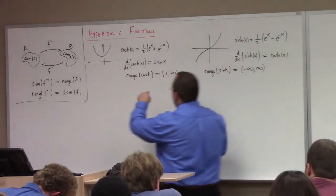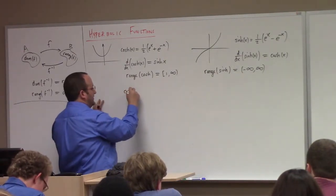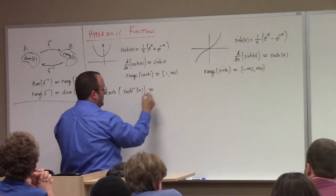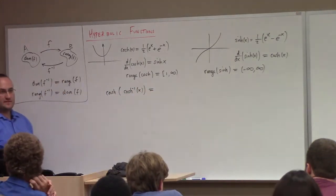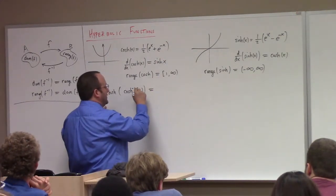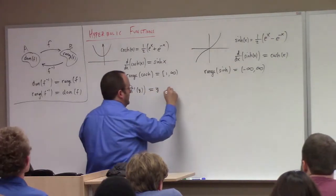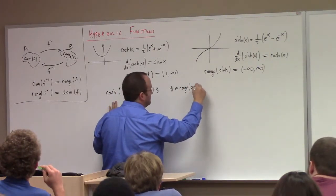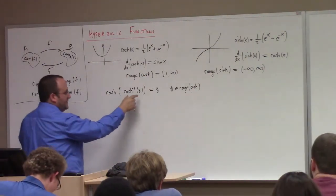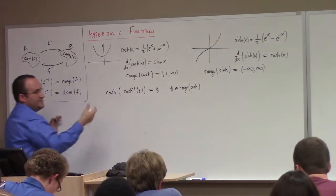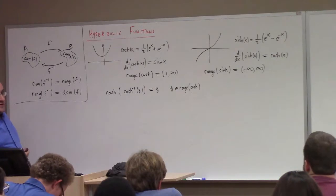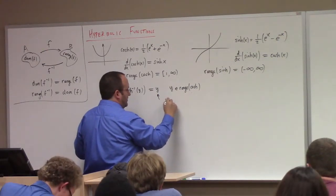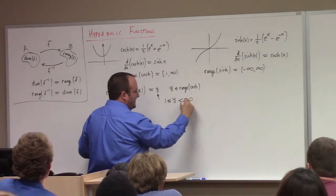So if we think about how inverse hyperbolic cosine should be defined — cosh inverse of x should satisfy: cosh of cosh inverse of x equals x, and this is for y in the range of cosh. In other words, inverse hyperbolic cosine is only defined for inputs from 1 to infinity. So y has to satisfy 1 less than or equal to y.